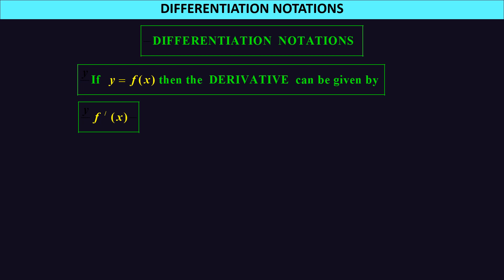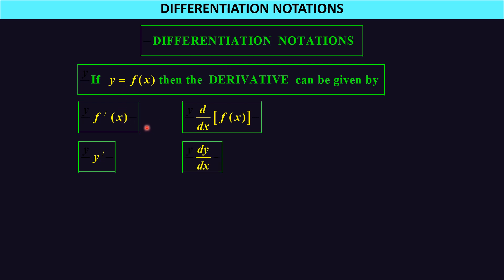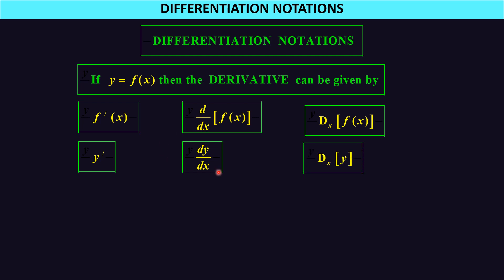If I have y equal to f(x), the derivative can be written as f prime x. But instead of f prime x I can also use y prime. Or I can use the d/dx notation: d/dx of f(x), or dy/dx. Mathematicians try to economize, so d/dx we can just write dx of f(x) or dx of y.